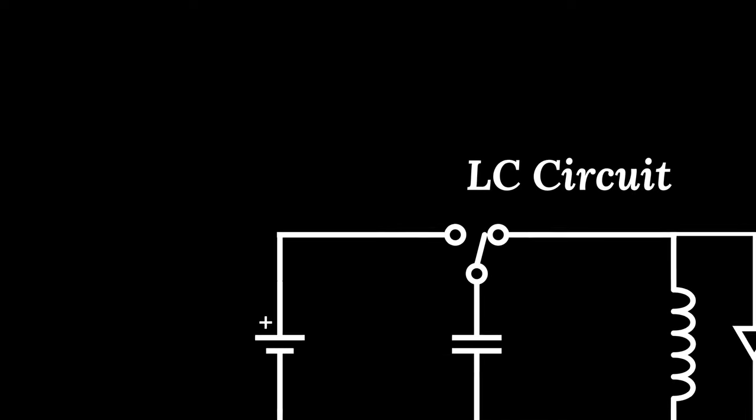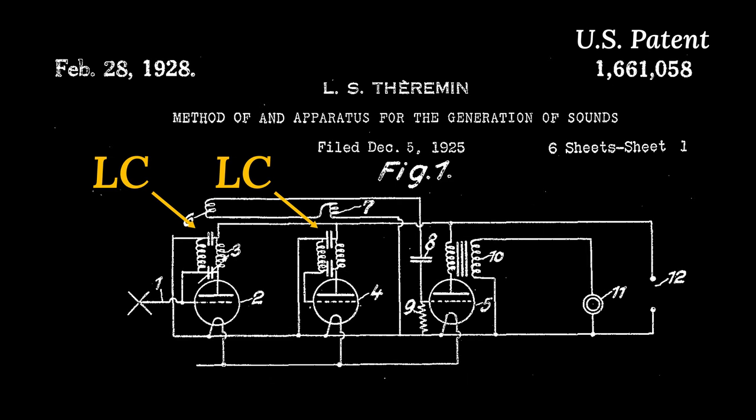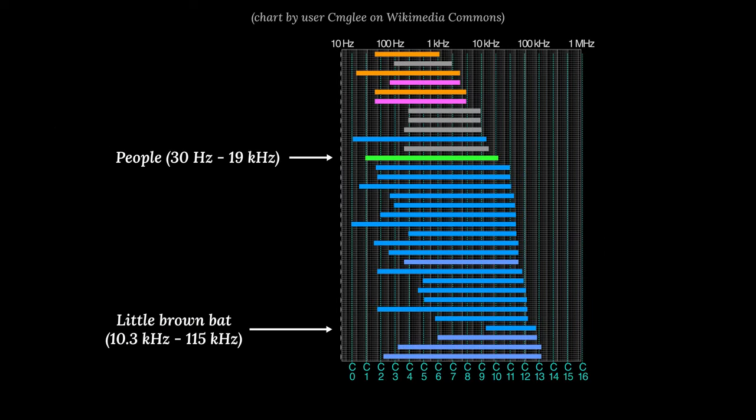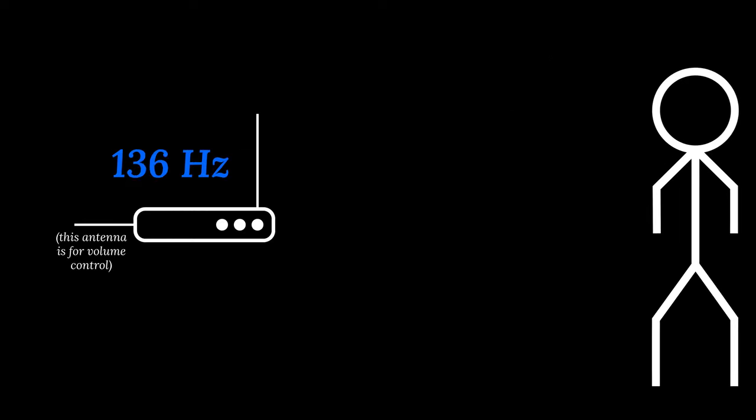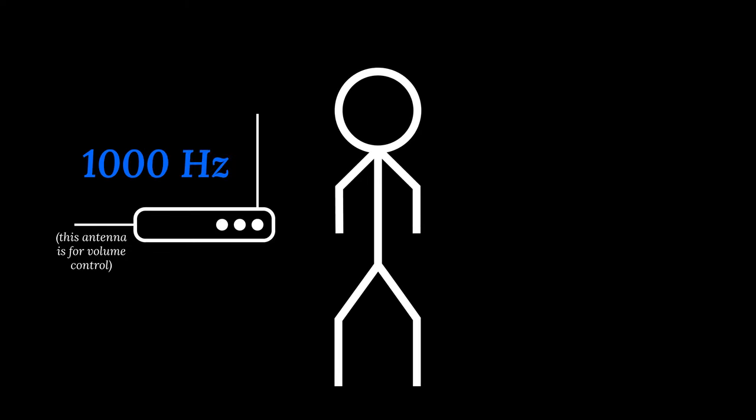Meet Leon Theremin, inventor of the Theremin. You might have heard it used as lazy shorthand for spooky Halloween times, but it's surprisingly expressive near the hands of a skilled player. This instrument uses two LC circuits and a radio antenna. Both circuits are tuned to around 500 kilohertz, above two octaves above the hearing range of bats. One circuit uses a variable capacitor attached to the antenna. Human beings are just capacitive enough that this antenna increases the frequency of the circuit as we approach it.